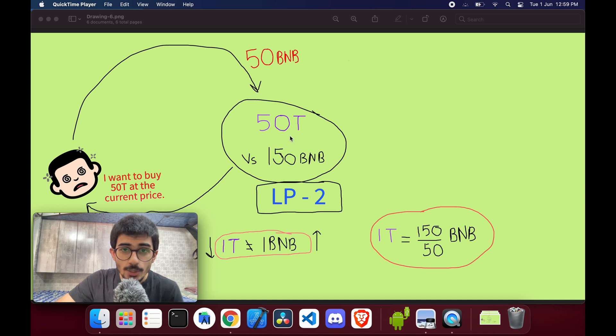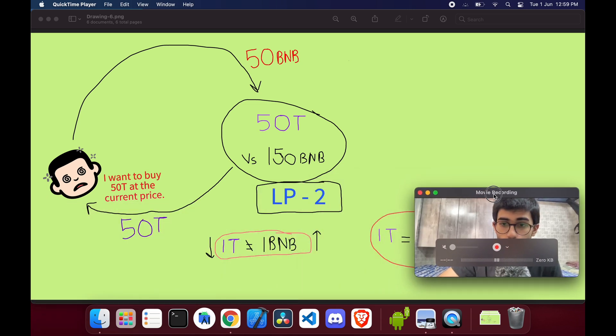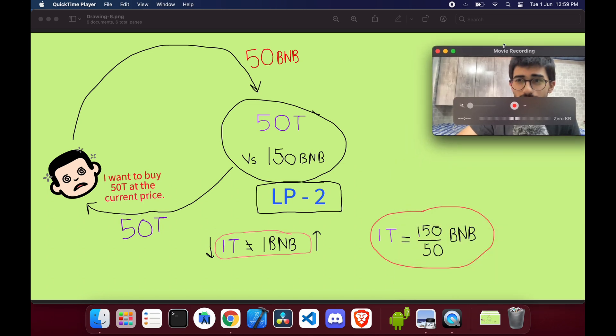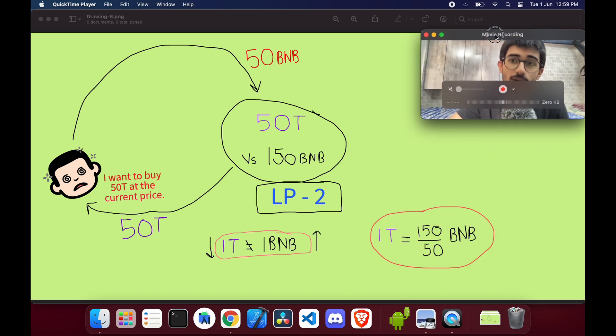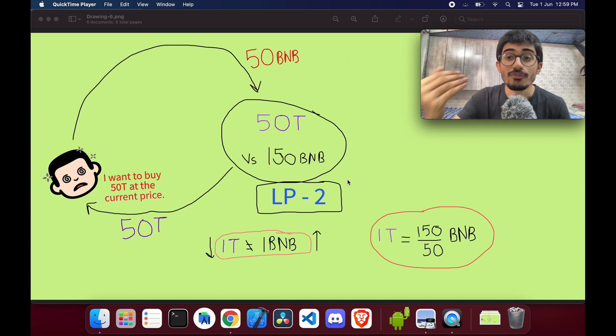So here, 50 tokens are worth 150 BNBs. That means one token is worth 150 by 50, that is 3 BNBs. The price has jumped by 3x by just one transaction. So that's why having a big liquidity pool is very essential for a new cryptocurrency to come in the market. Please make sure that you have a good liquidity pool set up - you have enough amount of BNBs or tokens in your liquidity pool so that it does not affect the price to such a huge extent.